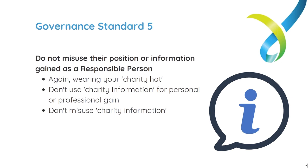The next duty in Governance Standard 5 is that responsible people do not misuse their position or information they may have gained in their role. Again, you've got to have your charity hat on here. Responsible people can't take information received in their role as a charity responsible person and use it for personal gain, professional gain, or misuse it in ways that might be detrimental to the charity itself.